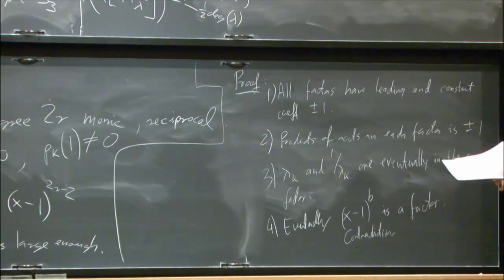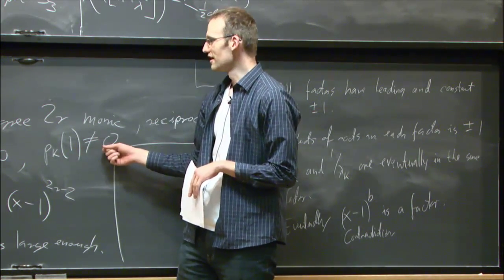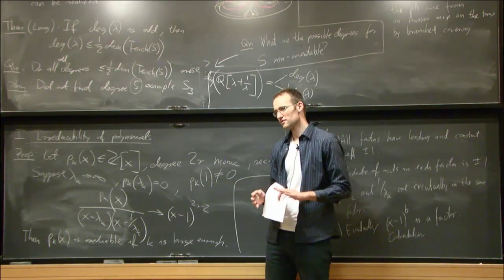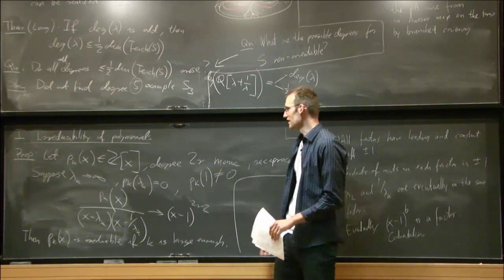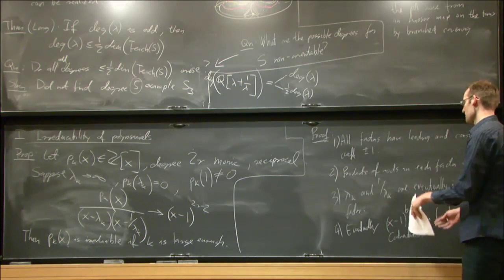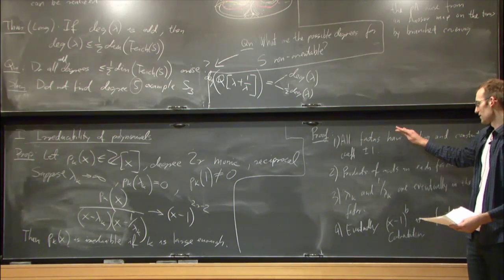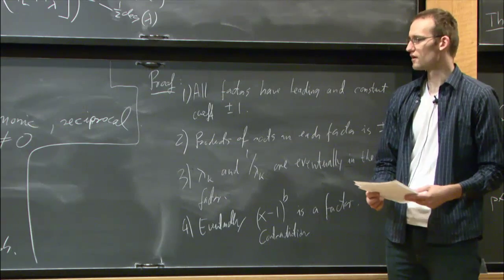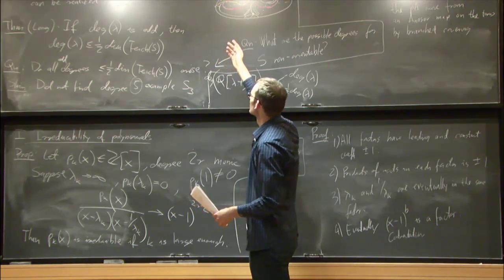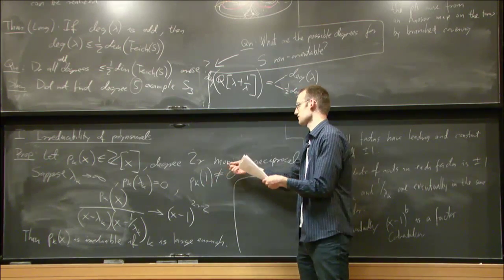This is the simplest version of the lemma. You can also allow 1 to be a root of multiplicity 4 throughout the sequence — by the same argument, there is always an (x-1)^4 factor but the remaining part must be irreducible. When constructing different degrees, this is how you obtain intermediate degrees: you control how many times 1 is a root of the polynomial.